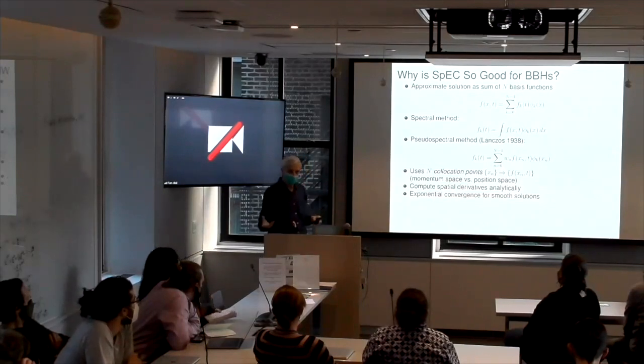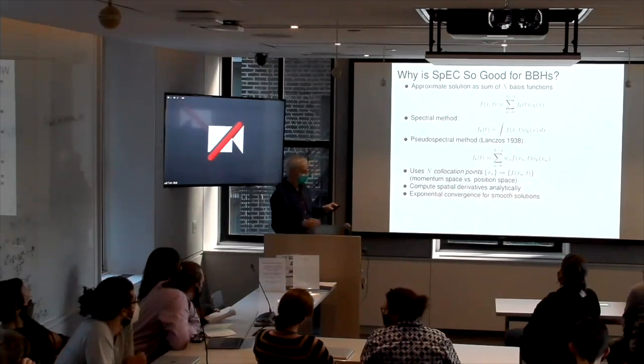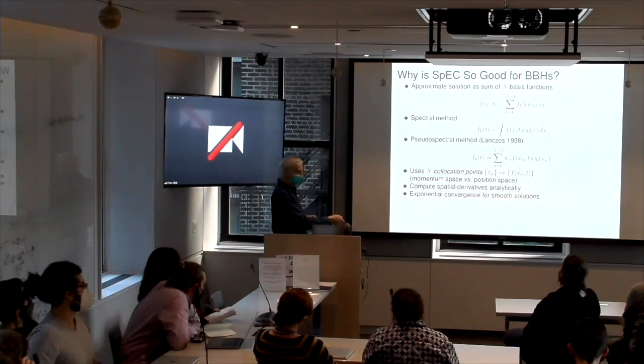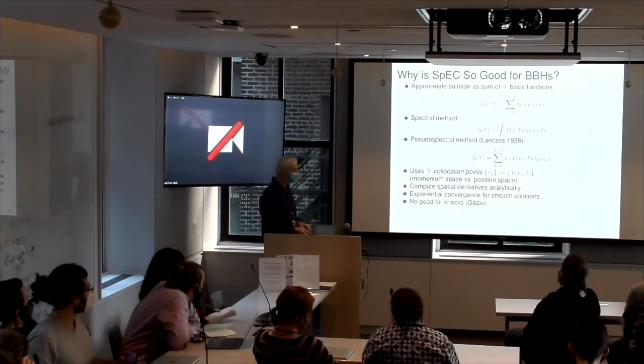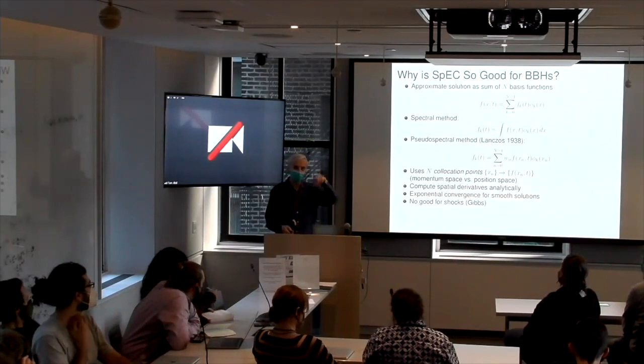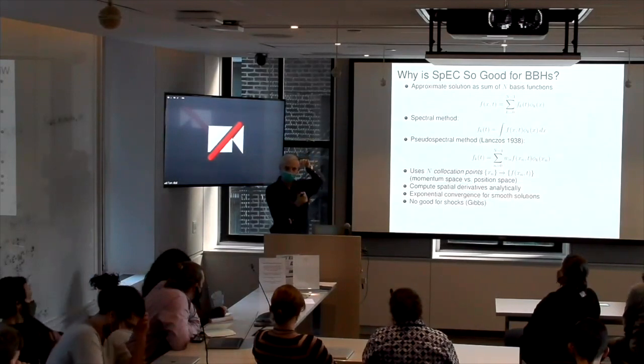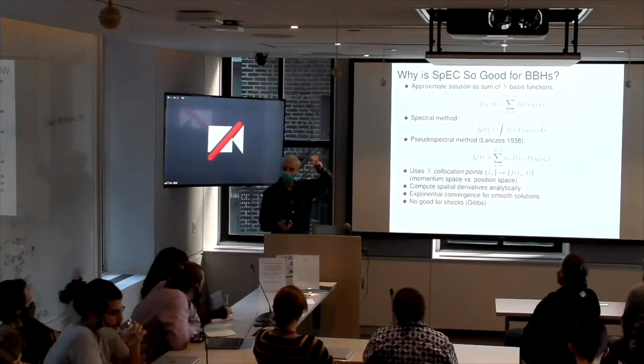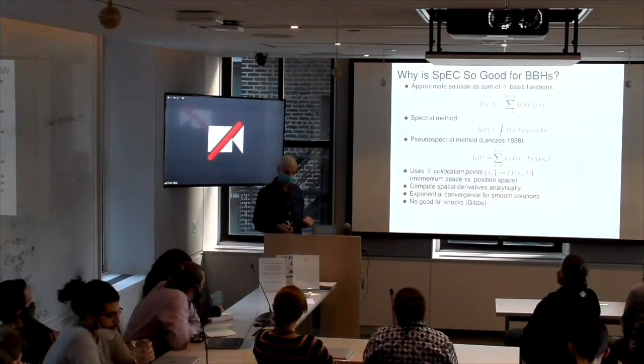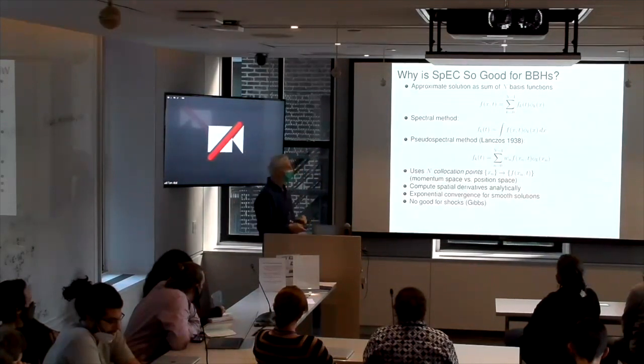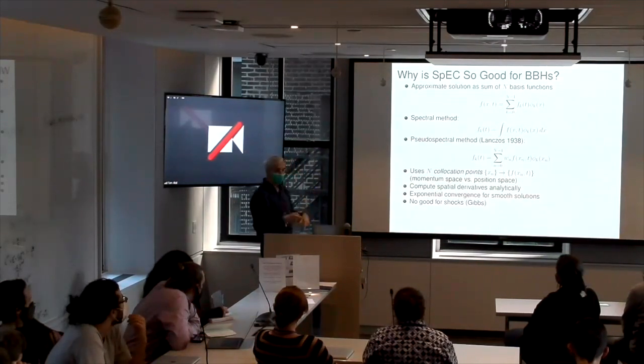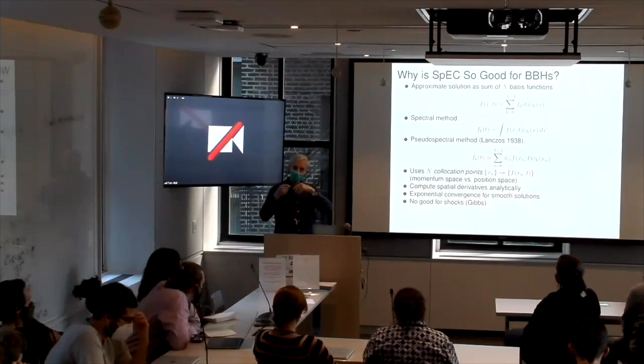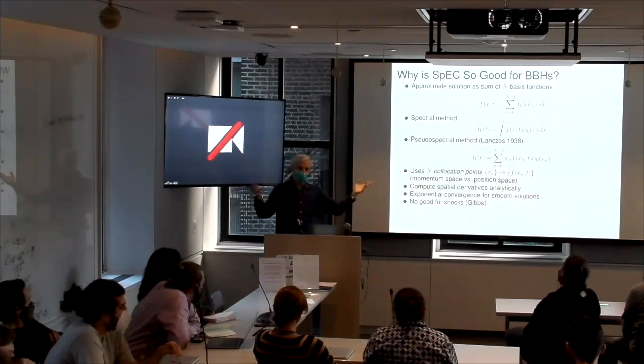But there's no free lunch. The key thing is, this is true for smooth solutions. And so if you have a shock wave, then what happens is you get Gibbs phenomenon. And when you represent the discontinuity as a superposition of basis functions, you get oscillations and overshoot. So the SPECT code does do things like neutron stars, but for that part, we just switch to a traditional finite difference code, just like everybody else.